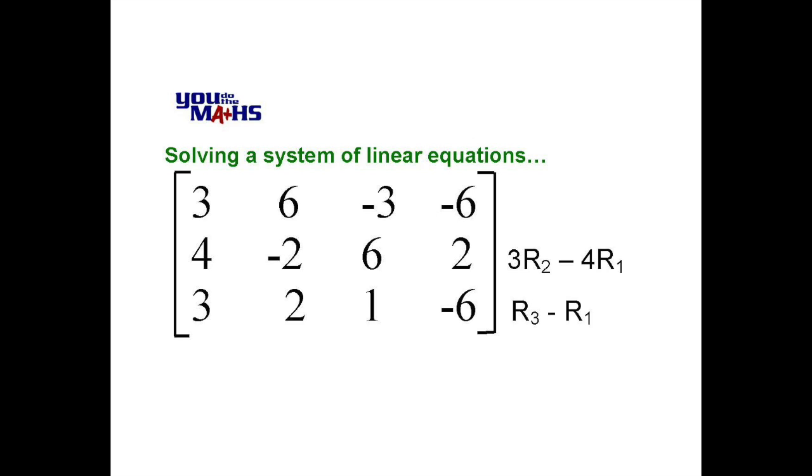Row 2 is a little bit more complicated but still quite straightforward in calculation. We'll do 3 lots of row 2 minus 4 lots of row 1. It would be wise to pause here to see if you agree with the resulting rows from these row operations.